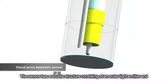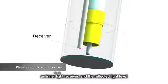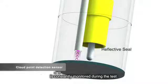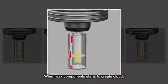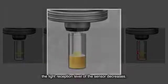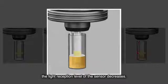The sensor has a double structure consisting of an outer light emitter and an inner light receiver, and the reflected light level is constantly monitored during the test. When wax component starts to create cloud, the light reception level of the sensor decreases.